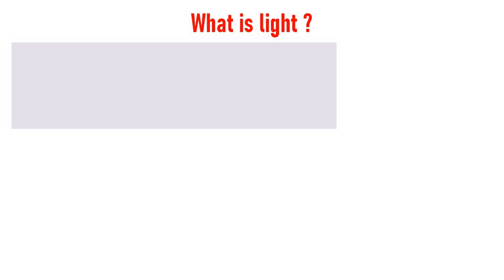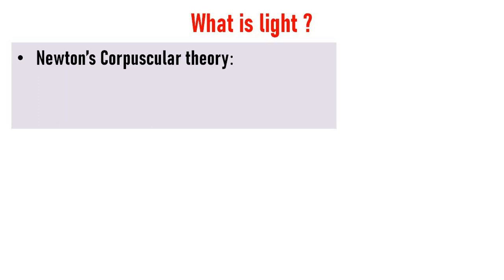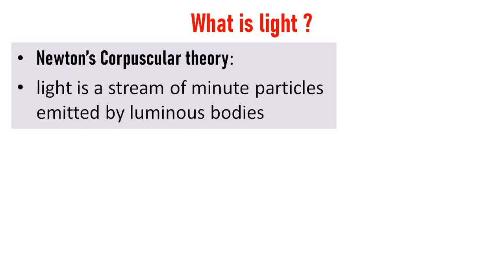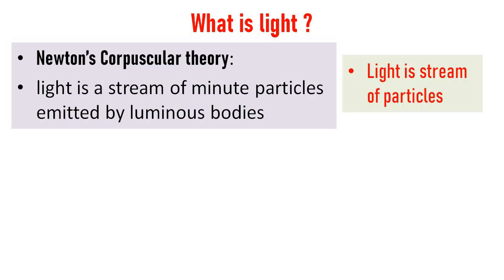Different scientists tried to answer this in different ways. According to Newton's corpuscular theory, light is a stream of minute particles emitted by luminous bodies — that is, light is a stream of particles.